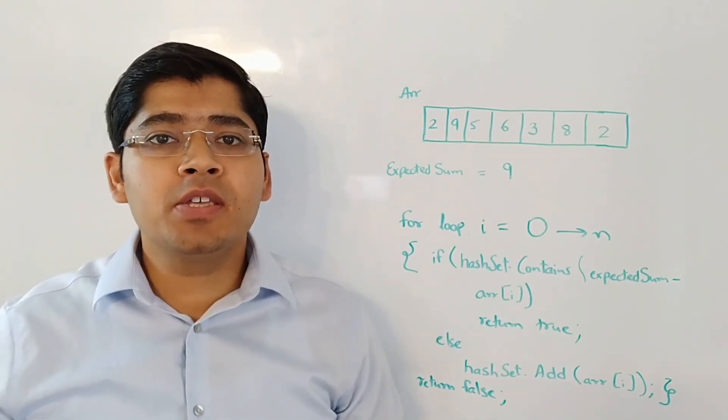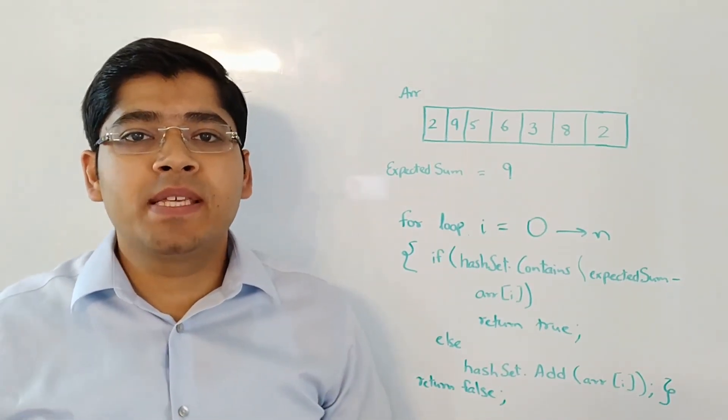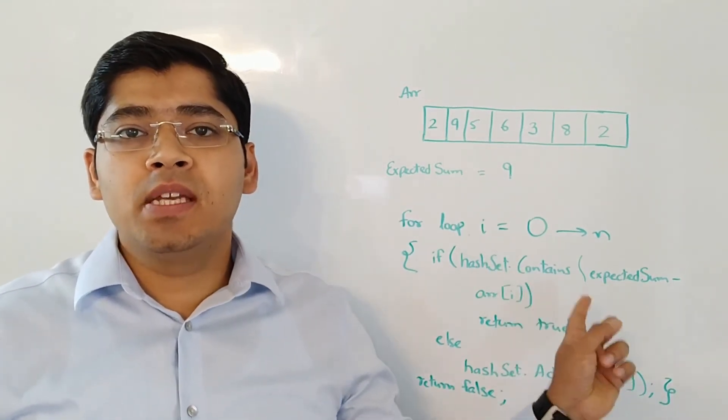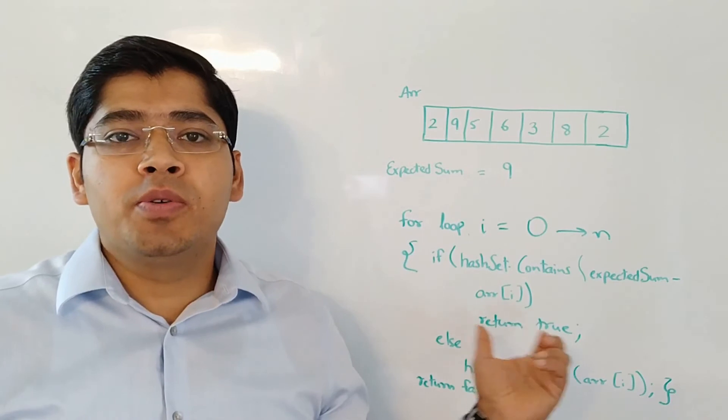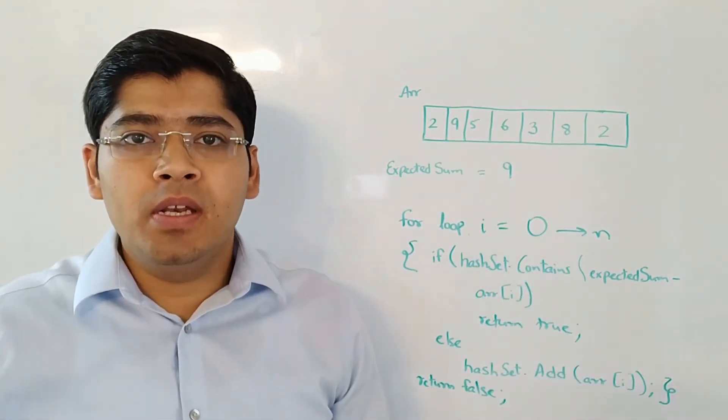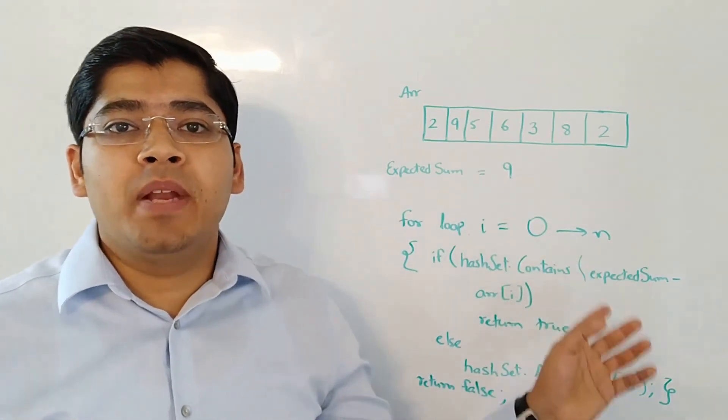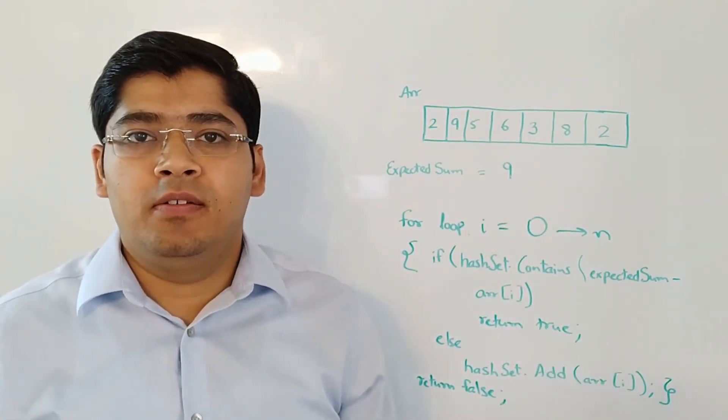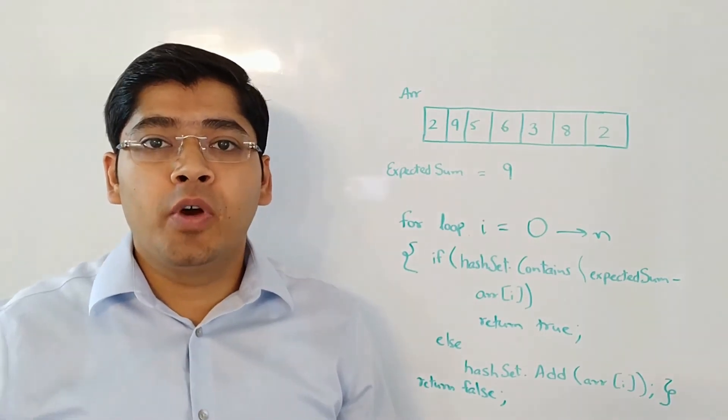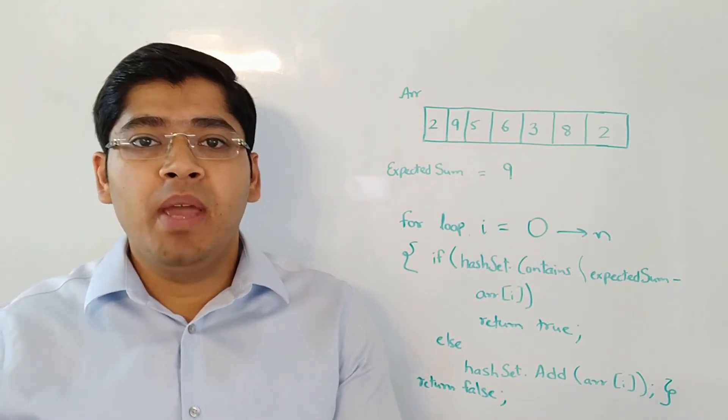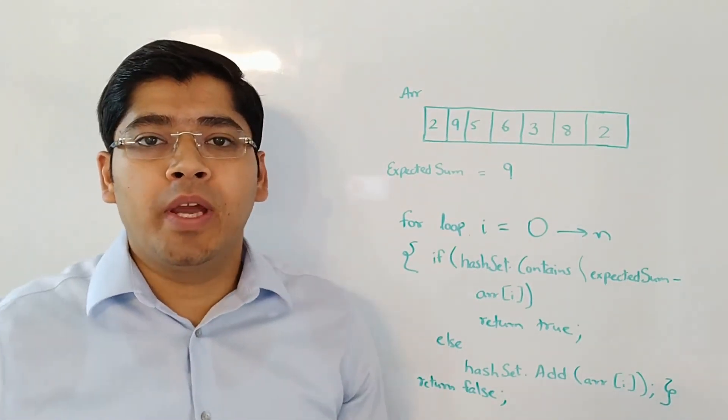Now the interviewer will ask you what's the runtime complexity of this solution. Since it's a single for loop and you are using the power of a hash set where the lookup is O(1), the algorithmic complexity of this whole solution is O(n). At this point, the interviewer might like your solution and he or she may ask you to code it on the whiteboard.